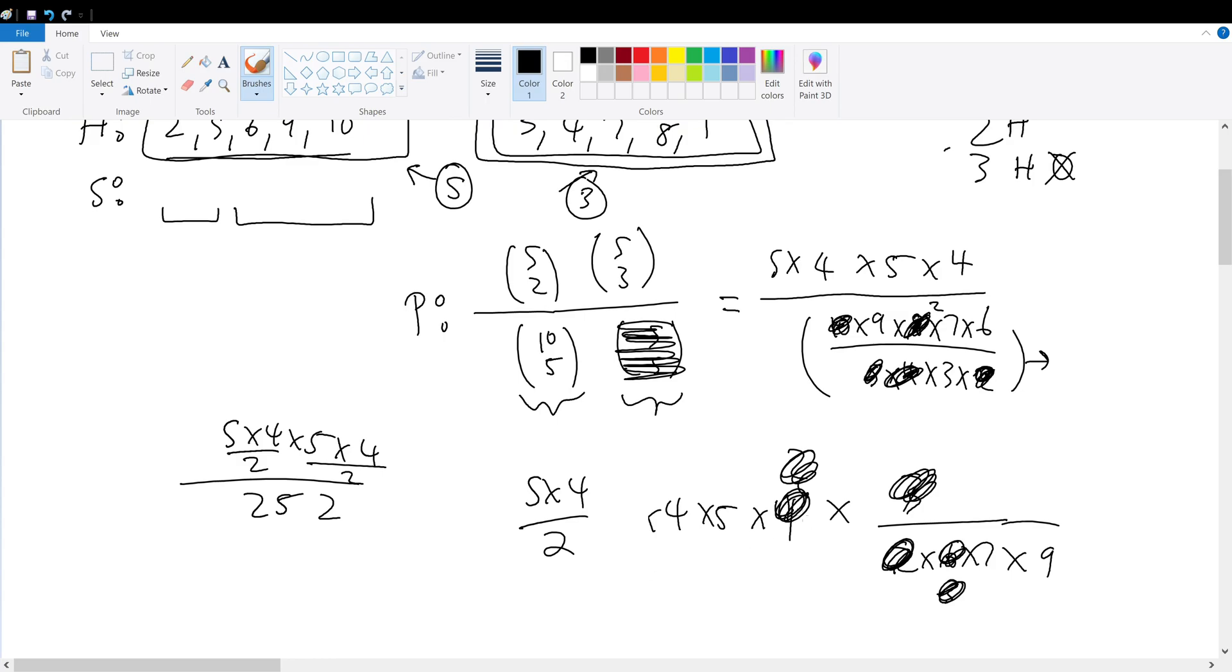So this is what? It's kind of a bit messy here. It's 5 times 4 times 5 times 4, right? I'm just rewriting it. Times 3 over 9 times 2 times 7 times 6. But now let's remember to divide by 2.